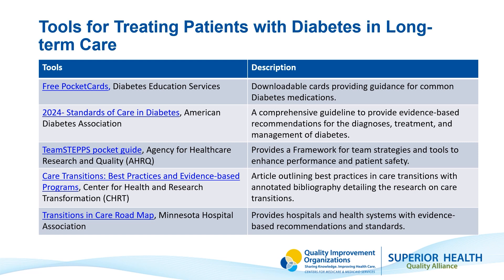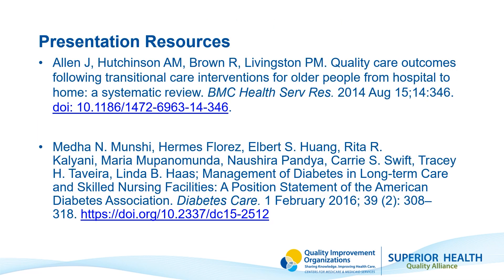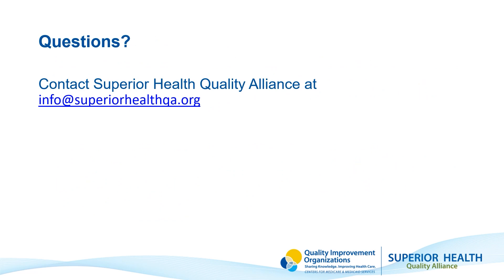We would challenge you to ask questions about diabetes care management in your healthcare setting. Where are the gaps? Where are you seeing gaps in your processes? Are your residents experiencing hyper or hypoglycemic events, and what steps are you taking to prevent them? All of these questions can lead you to the development of a root cause analysis, action planning, and initiating a plan-do-study-act cycle. We challenge you to analyze your data and determine where there are opportunities for improvement. If you have questions about this video series or others, please contact us at info@superiorhealthqa.org. Thank you.